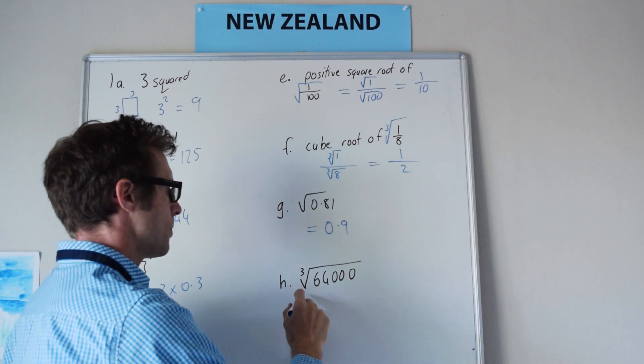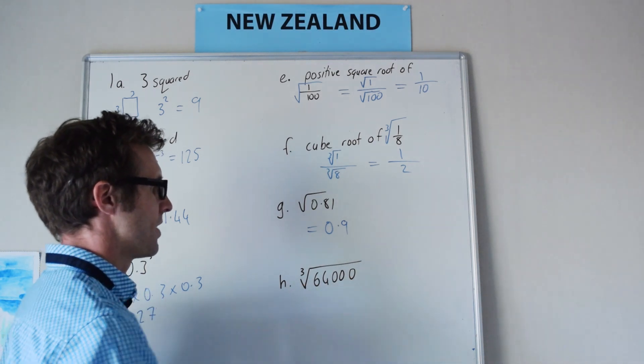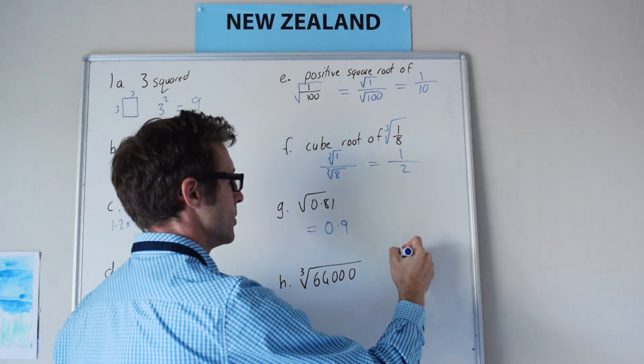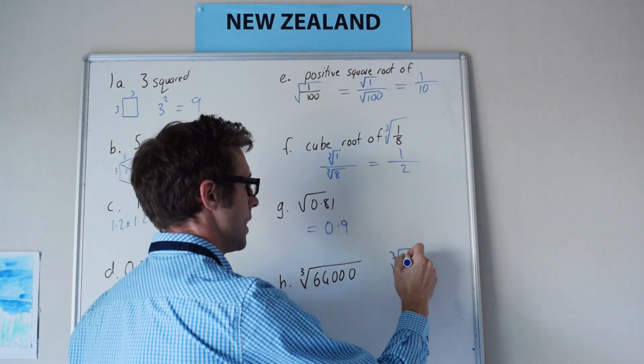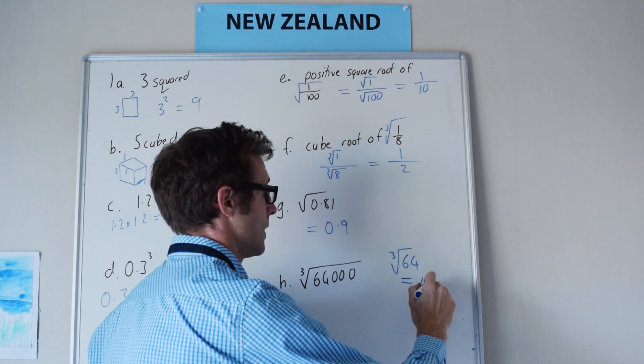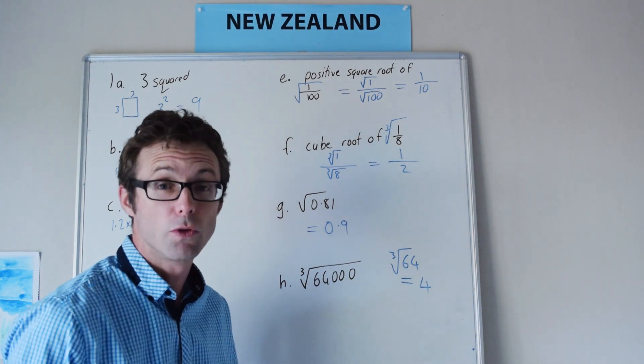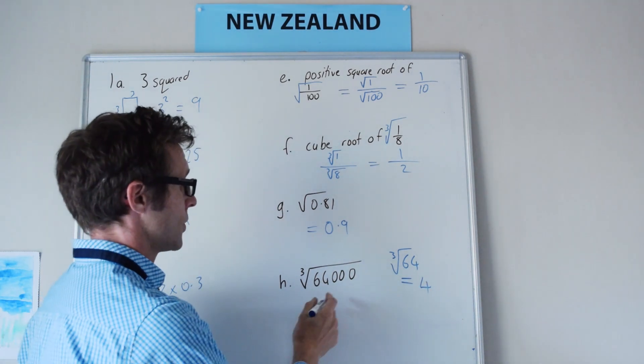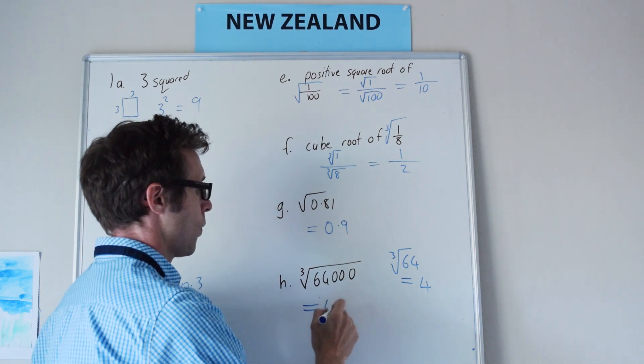This one here, the cube root of 64,000. Now just imagine for a moment that we were doing the cube root of 64 and you would know this would be 4. 4 times 4 is 16, times 4 is 64. So the cube root of this is going to be 4.